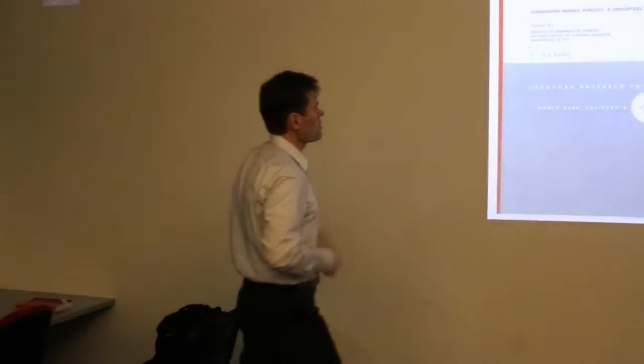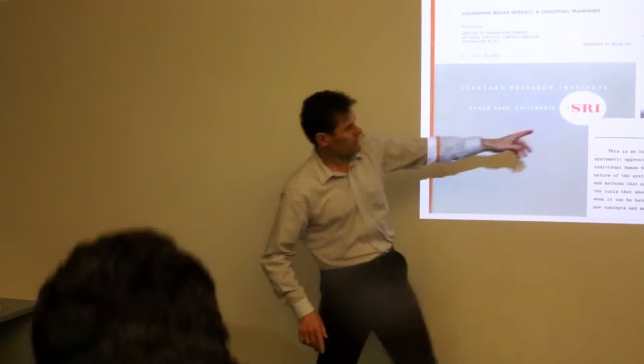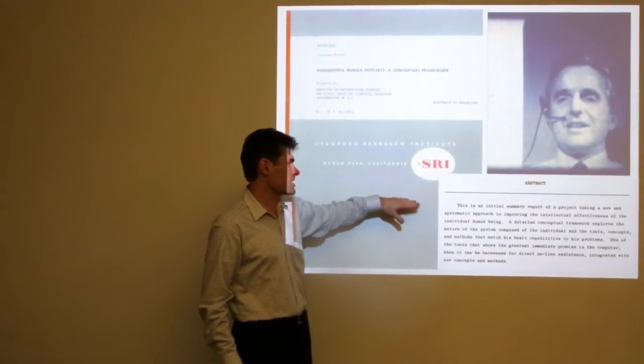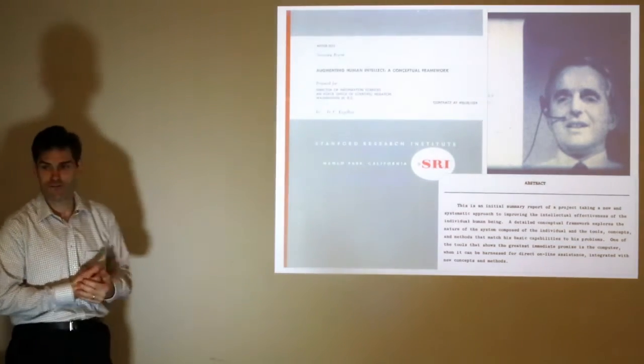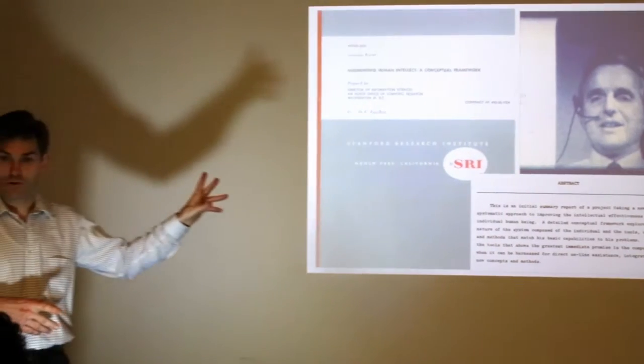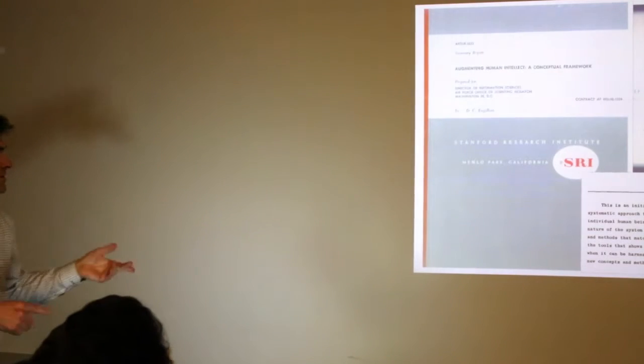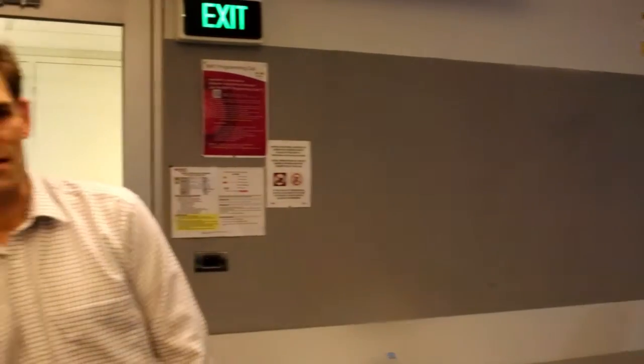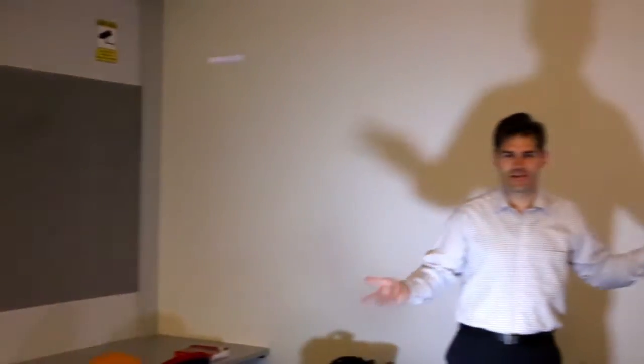He wasn't going down the AI path of building computers that can think for us. He was going down the IA path, intelligence augmentation. How can we make ourselves smarter? Because we're obviously not smart enough. In 1962, the year I was born, he wrote a report. Could we just flick over to the next slide?